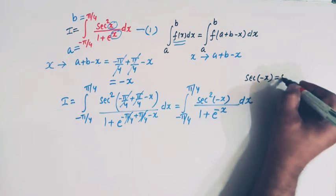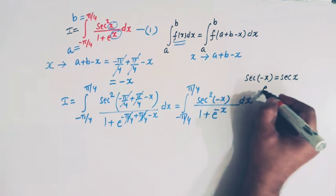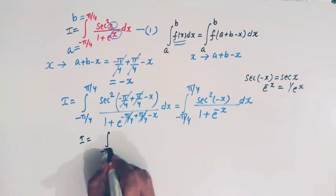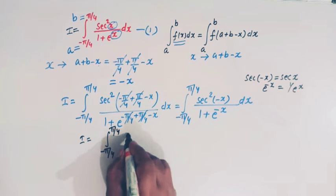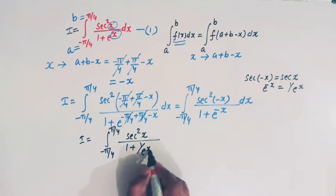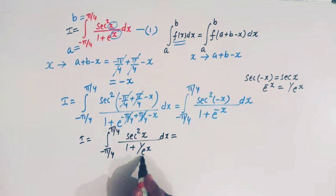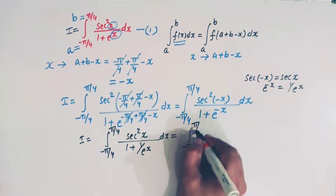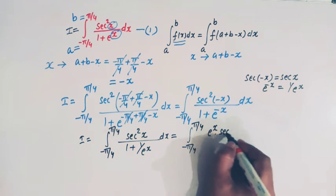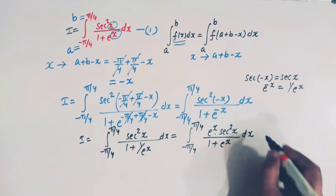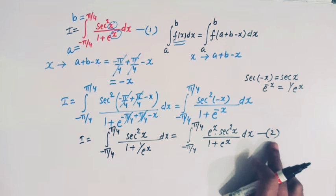Now we know that sec of minus x equals sec x, so sec squared of minus x equals sec squared x. This integral therefore becomes the integral from minus pi by 4 to pi by 4 of sec squared x divided by 1 plus 1 over e raised to x, times dx. Multiplying numerator and denominator by e raised to x, we can write this as the integral from minus pi by 4 to pi by 4 of e raised to x times sec squared x divided by 1 plus e raised to x, times dx.